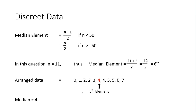Next we are going to find something called the median element. The median element equals (n + 1) / 2 if the n value is less than 50, and equals n / 2 if n is greater than or equal to 50, where n is the total number of values. In this example n is 11, so the median element is (11 + 1) / 2 = 12 / 2 = 6. We have to find the sixth element in the arranged data set.